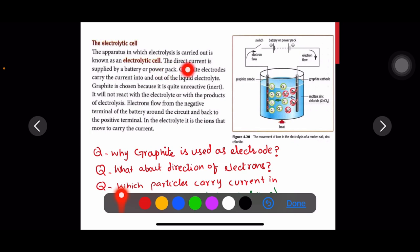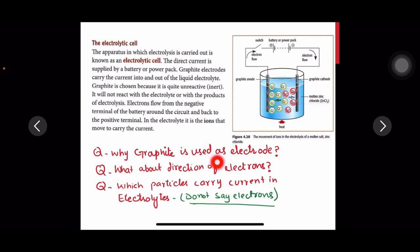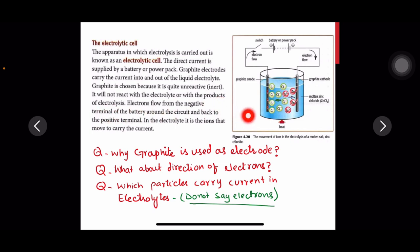Direct current is supplied by a battery or power pack. Graphite electrodes carry the current into and out of the liquid electrolyte. We use graphite because it is quite unreactive and inert, and it is a very good conductor — though it is a non-metal, it can conduct electricity because of delocalized electrons.